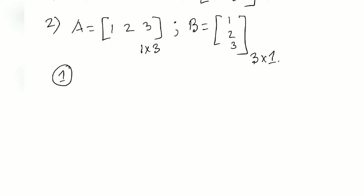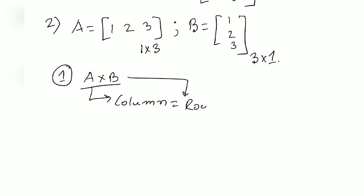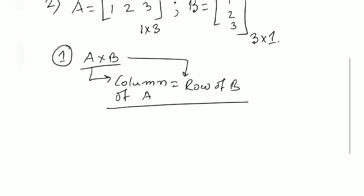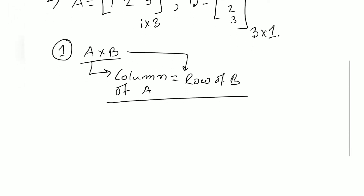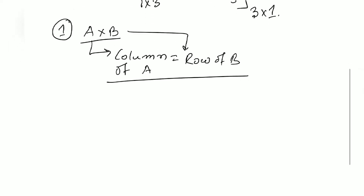Now if we want to multiply A and B, the most important thing to keep in mind is that the column of A must equal the row of B. This is known as the CR rule. These terms must be equal to each other for two matrices to be multiplied.